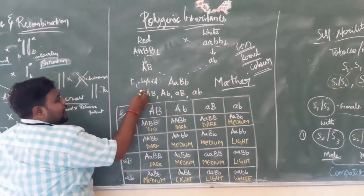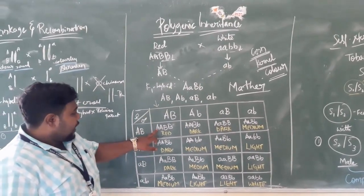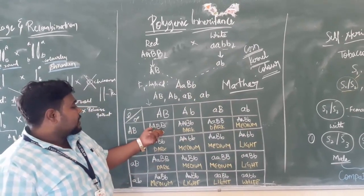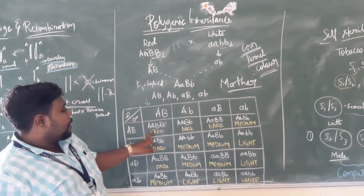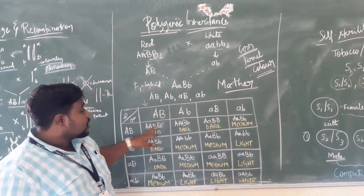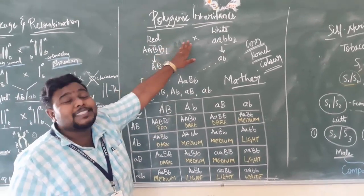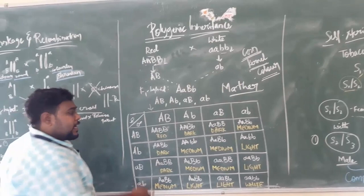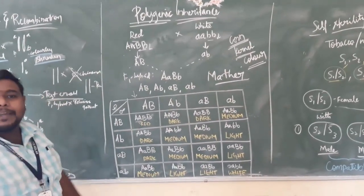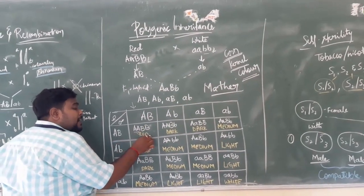In this particular F1 hybrid Punnett square, we can observe various gene combinations. Capital A, capital A, capital B, capital B — we are having two different genes here. These two different genes are responsible for developing a particular color. If only one gene is responsible for one color, there is no polygenic inheritance. But here, two of the genes are responsible for a particular color — that is what polygenic inheritance means.